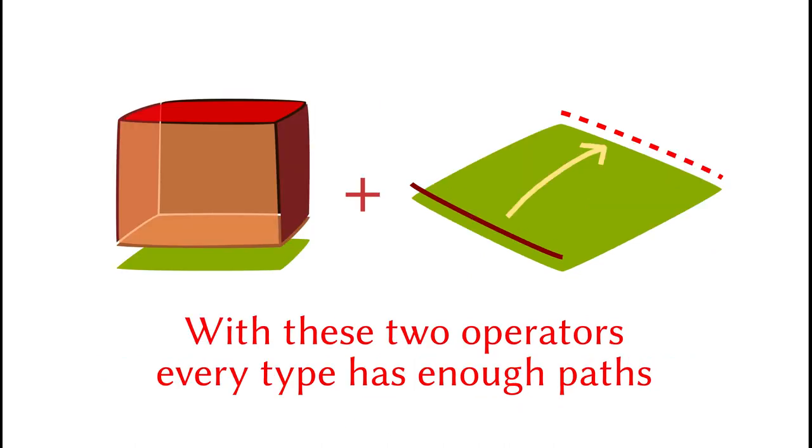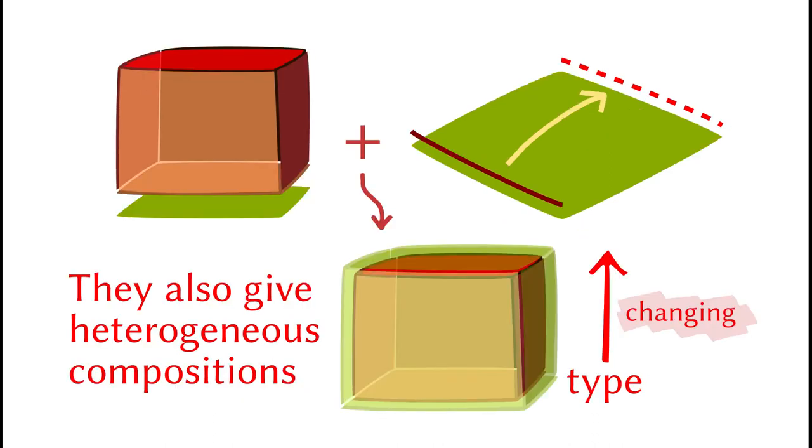There are many other variants of these two operators, but any reasonable choices should generate enough elements to complete the definition of a type. One important lemma that we will use in the future is that you can define heterogeneous composition in terms of these two operators. Heterogeneous composition is similar to homogeneous composition we saw, except that the type can change along the composition direction.